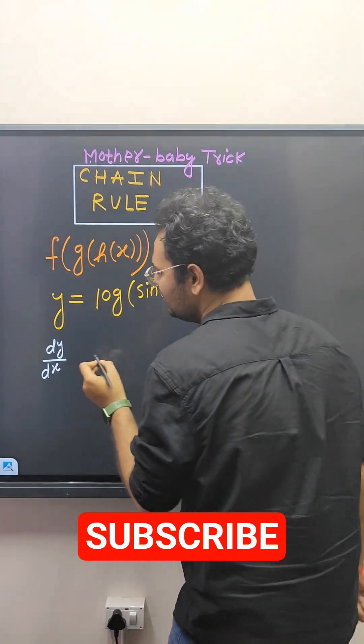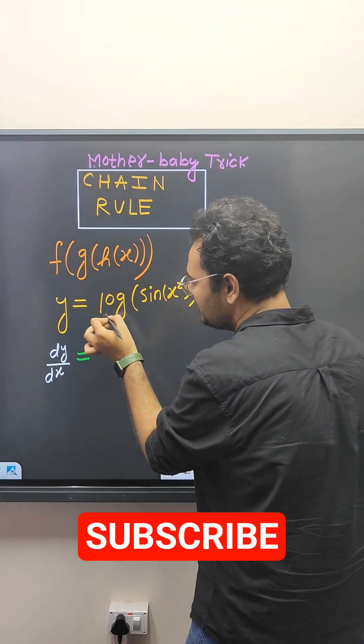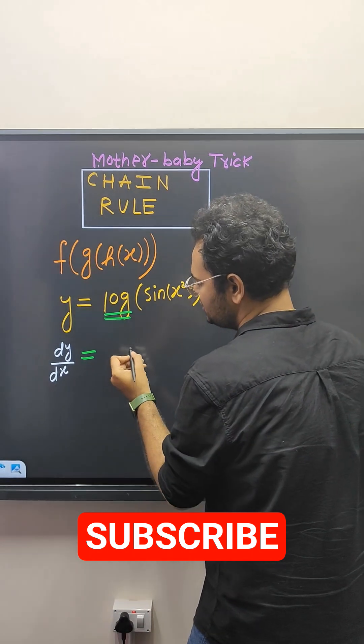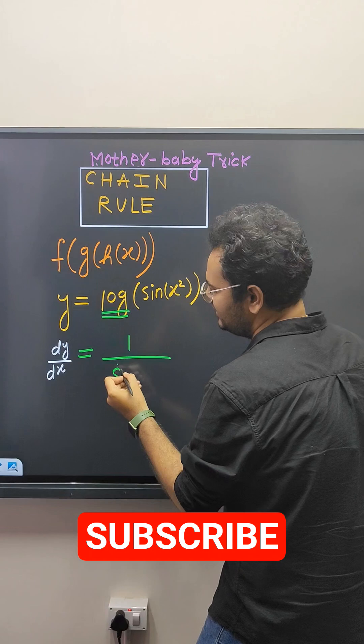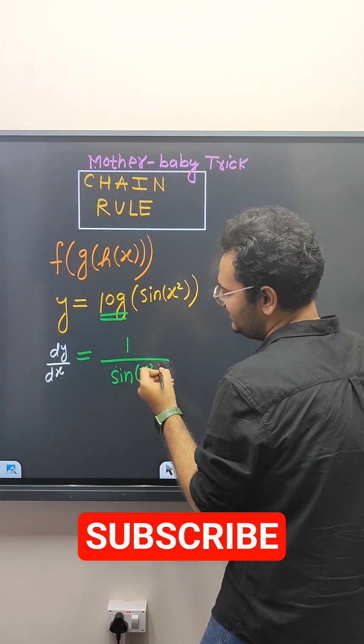What I mean by this? Now I have to differentiate mother first. What is differentiation of mother? One upon x. Log differentiation is one upon x, but I will write one upon sine of x square.